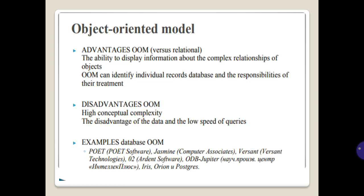Object-Oriented Model (OOM) advantages versus the relational model: the ability to display information about complex relationships of objects, and the ability to identify individual records in a database and the responsibilities of their treatment. Disadvantages of OOM include high conceptual complexity, disadvantages in data handling, and low query speed.